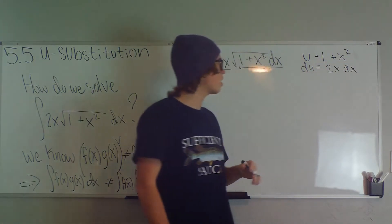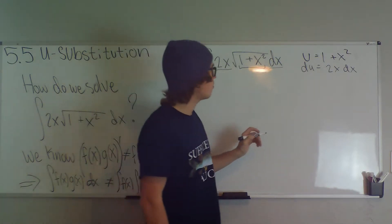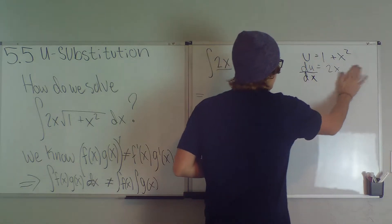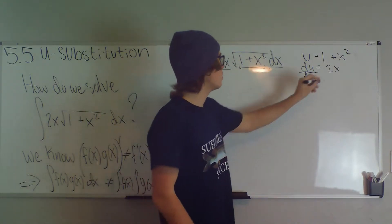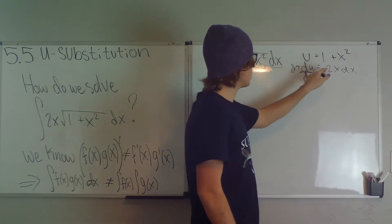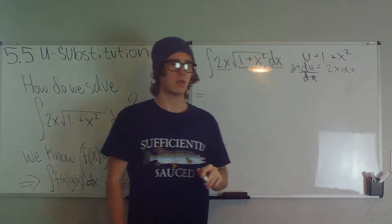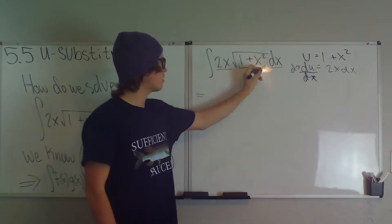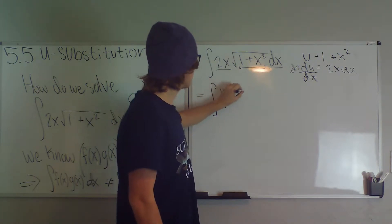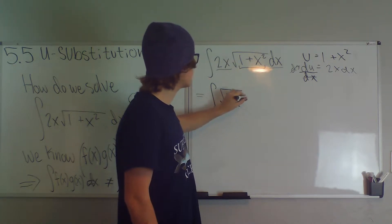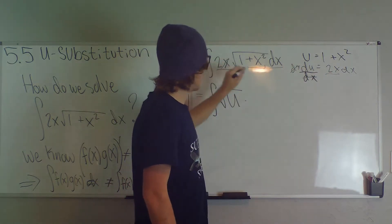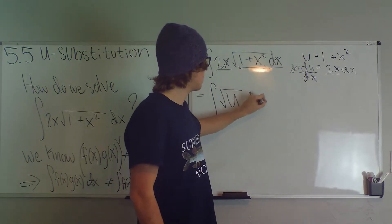If we do the derivative of u with respect to x, that equals du/dx, and multiplying both sides by dx we get du is equal to 2x dx. We notice we have 2x dx right there in our integral, so this becomes the integral of square root of u times du — that gets rid of our 2x and our dx.